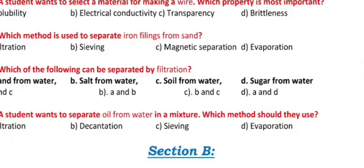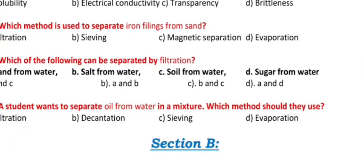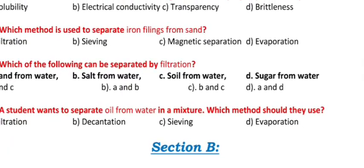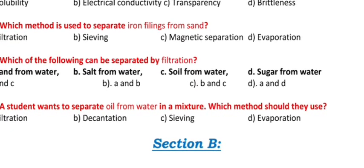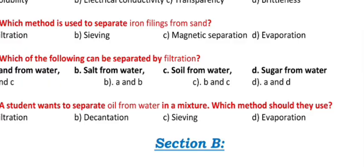Question 12: A student wants to select a material for making a wire. Which property is most important? a) Solubility, b) Electrical conductivity, c) Transparency, d) Brittleness.